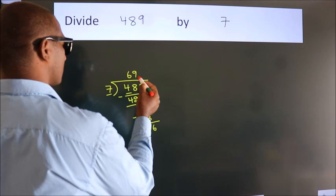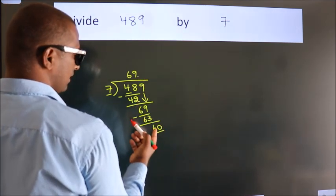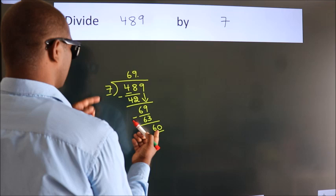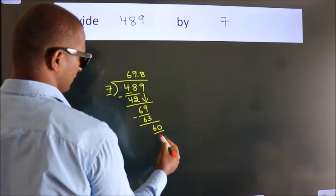So what we do is, we put a dot and take 0. So 60. A number close to 60 in the 7 table is 7 times 8, which is 56.